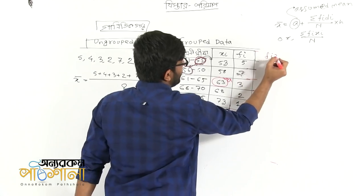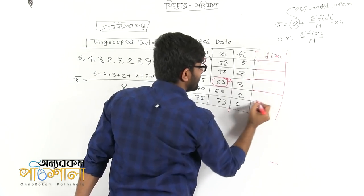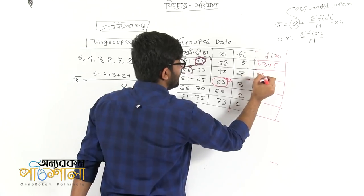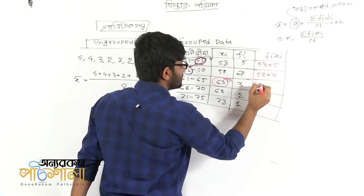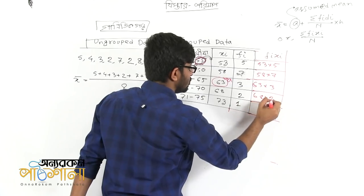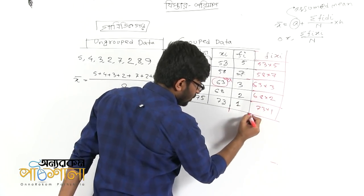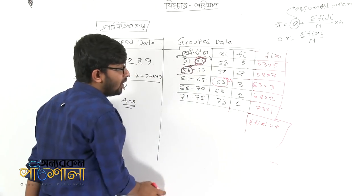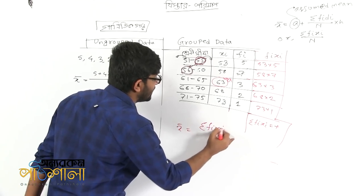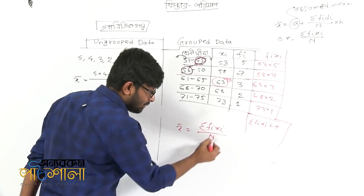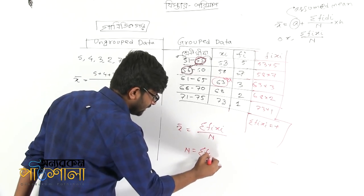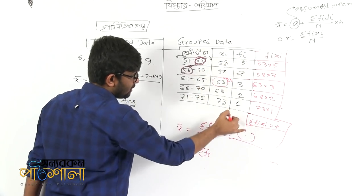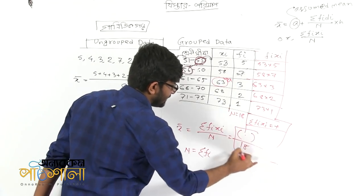We should do a summation of f_i * x_i. So if we should start f_i * x_i value, we should start f_i * x_i. F_i into x_i: 53 into 5, 58 into 7, 63 into 3, 68 into 2, 73 into 1. Summation of f_i * x_i divided by n. N means technically it is summation of f. N value is 18. Divided by n value 18. Which means that we can raise our average value.